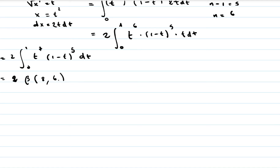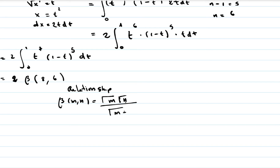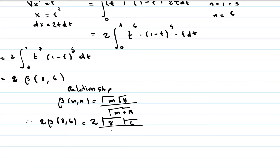To find the numerical value, we use the relationship from the previous video: beta of m, n equals gamma of m times gamma of n divided by gamma of m plus n. Our function is 2 beta of 8 and 6, so this equals 2 times gamma of 8 times gamma of 6, all divided by gamma of 8 plus 6, which is gamma of 14.